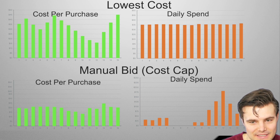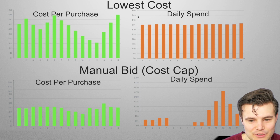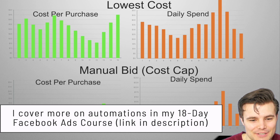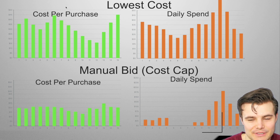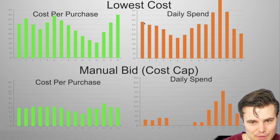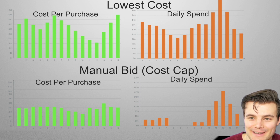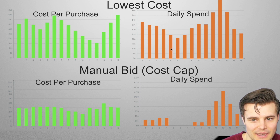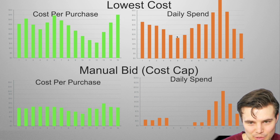I actually like running both lowest cost and cost cap at the same time. That way I get consistent sales with varying results, and on really competitive days I'm not losing money on the cost cap. On really good days the cost cap hits its spend so I can generate twice as many sales. I use automations to scale spend up or down based on results — pausing or reducing spend on bad days, and boosting spend on good days. Combined with cost cap, on uncompetitive days we get an amazing amount of sales, while on terrible days I'm barely spending anything.